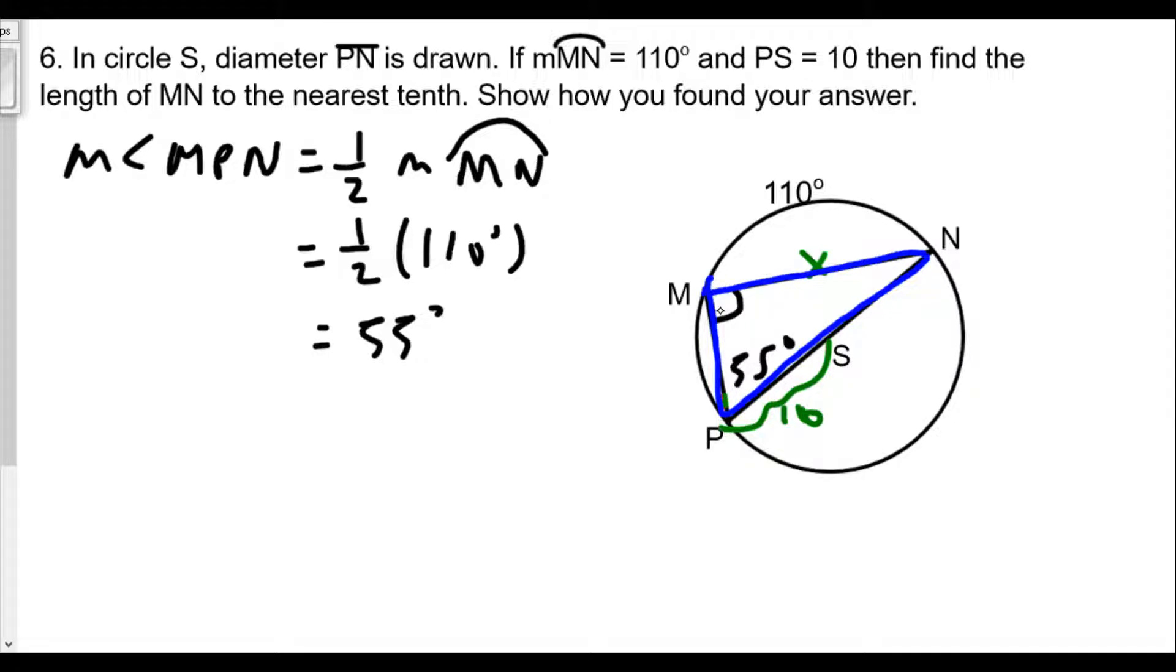we know one measurement of the side of the right triangle. You're saying, well, what side do we have? Is it 10? No. In this case, PN is the diameter, which must be twice the measure of the radius PS. Therefore, that's 20.